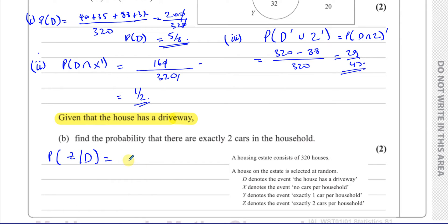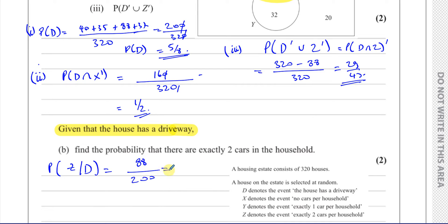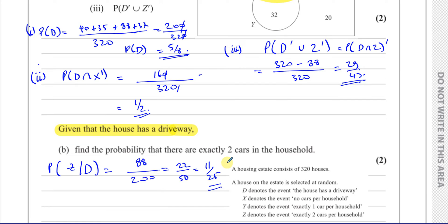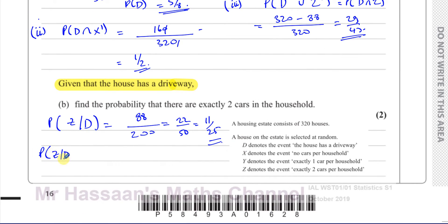That's the probability that there are two cars per household given that they have a driveway. Four goes into both of these — that'll be 22 over 50. In fact, another two goes into them — that'll be 11 over 25. 88 over 200 simplifies to 11 over 25. We can also think of this as: P(Z|D) = P(Z ∩ D) over P(D), which is the same thing we just calculated.